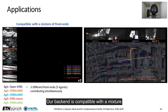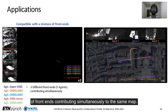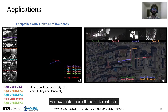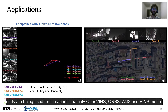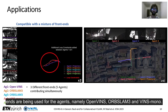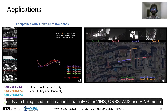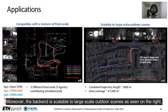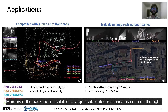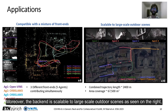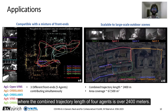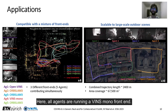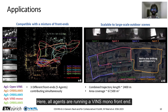Our backend is compatible with a mixture of frontends contributing simultaneously to the same map. For example, here three different frontends are being used for the agents: OpenVINS, ORB-SLAM 3, and VINS-Mono. Moreover, the backend is scalable to large-scale outdoor scenes, as seen on the right, where the combined trajectory length of four agents is over 2400 meters, with all agents running a VINS-Mono frontend.